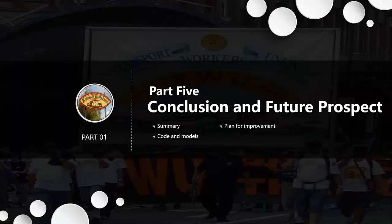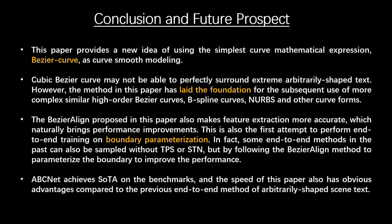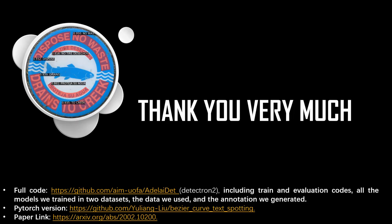Finally, let me make a brief summary of our paper. This paper provides a new idea for using the very simple Bezier curves as a smooth text-shaped modeling. The Bezier align proposed in this paper also makes feature extraction more accurate, which naturally brings performance improvements. This is also the first attempt to perform end-to-end training on boundary parameterization. ABCNet achieves the best current performance on the benchmark dataset, and compared with the previous end-to-end method of arbitrary shape text, the speed of this paper also has obvious advantages. The relevant code is available. Thank you for listening.